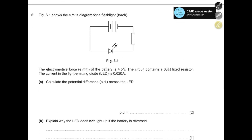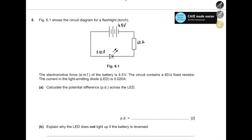Question 6: this figure shows the circuit diagram of a flashlight or torch. The EMF of the battery is 4.5 volts. The circuit contains a fixed 60-ohm resistor and an LED. The current in the LED is 0.02 amps. Calculate the potential difference across the LED.